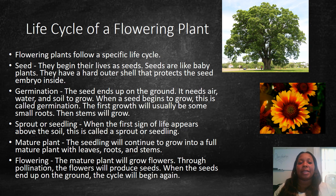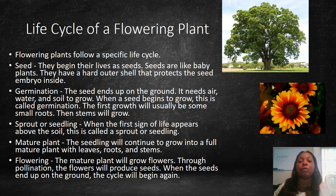The life cycle of a flowering plant starts with seeds — like baby plants with a hard outer shell that protects the seed embryo inside. Then comes germination: the seed ends up on the ground and needs air, water, and soil to grow; the first growth is usually small roots, then stems. When the first sign of life appears above the soil, this is called a sprout or seedling. The seedling continues to grow into a full mature plant with leaves, roots, and stems. Finally, the mature plant grows flowers, and through pollination the flowers produce seeds. When those seeds end up on the ground, the cycle begins again.